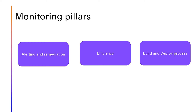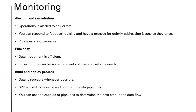The monitoring pillar has sub-pillars: alerting and remediation, efficiency, and build and deploy process. Operations is alerted to any errors and can respond to feedback quickly, with a process for addressing issues as they arise. Pipelines are observable and data movement is efficient. Infrastructure can be scaled to meet volume and velocity needs, data is reusable whenever possible, statistical process control is used to monitor and control the data pipelines, and outputs of pipelines determine the next step in the data flow.